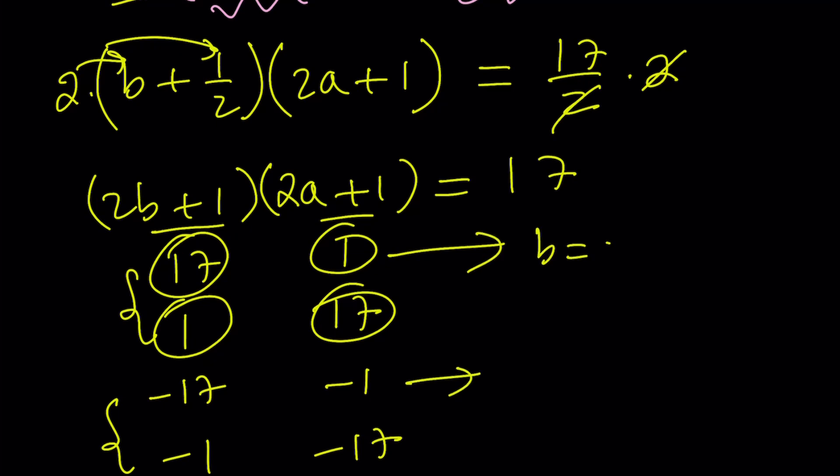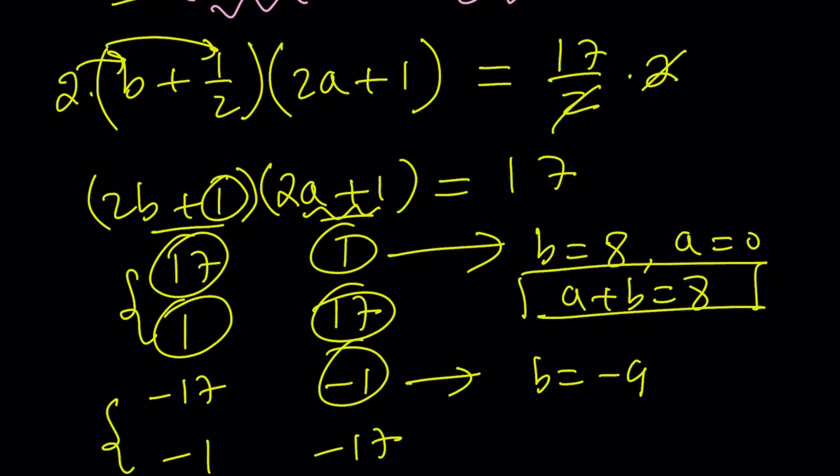So from here, I get b equals 8. And from the second one, I get a equals 0, which means a plus b is equal to 8. That's one of the values. And from the second one, from the negatives, I get if 2b plus 1 is equal to negative 17, that means 2b is equal to negative 18, which means b is equal to negative 9. And 2a plus 1 equals negative 1, means a is equal to negative 1. And their sum is going to be negative 10 in this case.